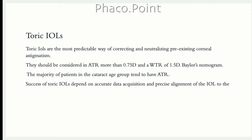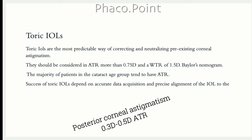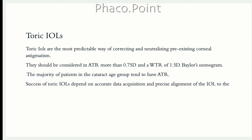Toric IOLs may be offered to patients with 0.75 diopters or more of against-the-rule astigmatism and 1.5 diopters or more of with-the-rule astigmatism as measured on the anterior corneal surface. The reason for this discrepancy is due to the presence of up to 0.3 to 0.5 diopters of against-the-rule posterior corneal toricity, as clearly explained by Dr. Douglas Koch in his Baylor's Nomogram for toric IOLs. The decoding and interpretation of the Baylor's Nomogram has already been presented by FacoPoint in another lecture series — kindly refer to it for better understanding.